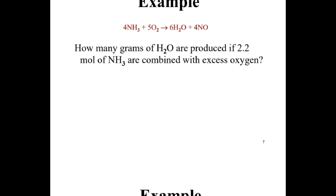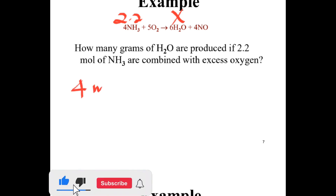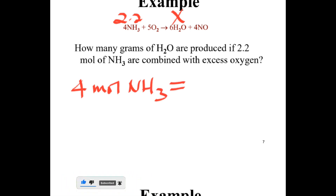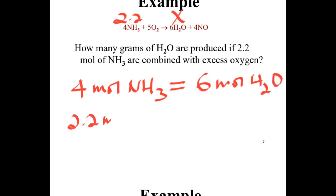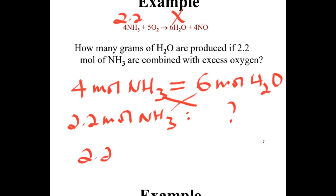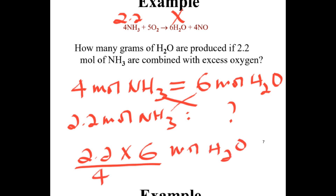How many grams of water are produced if 2.2 moles of ammonia are combined with excess oxygen? From the balanced chemical equation, 4 moles of ammonia produces 6 moles of water. So 2.2 moles of ammonia gives 2.2 times 6 over 4 moles of water, which equals 3.3 moles of water are produced.